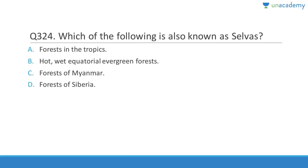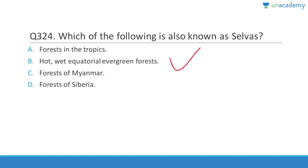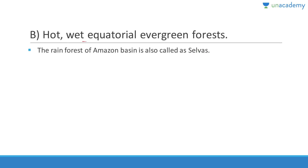Question 324: 'Selvas' are hot, wet, equatorial evergreen forests. The rainforest of the Amazon basin is also called selvas. Answer is B. They are usually found in the Brazil region.